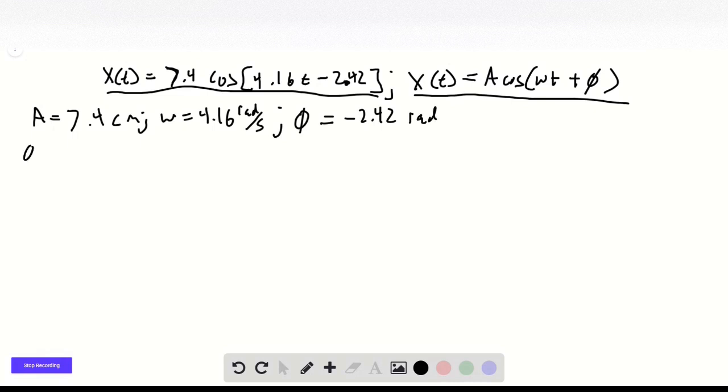All right, the period is just 2 pi over omega, which equals 1.51 seconds.